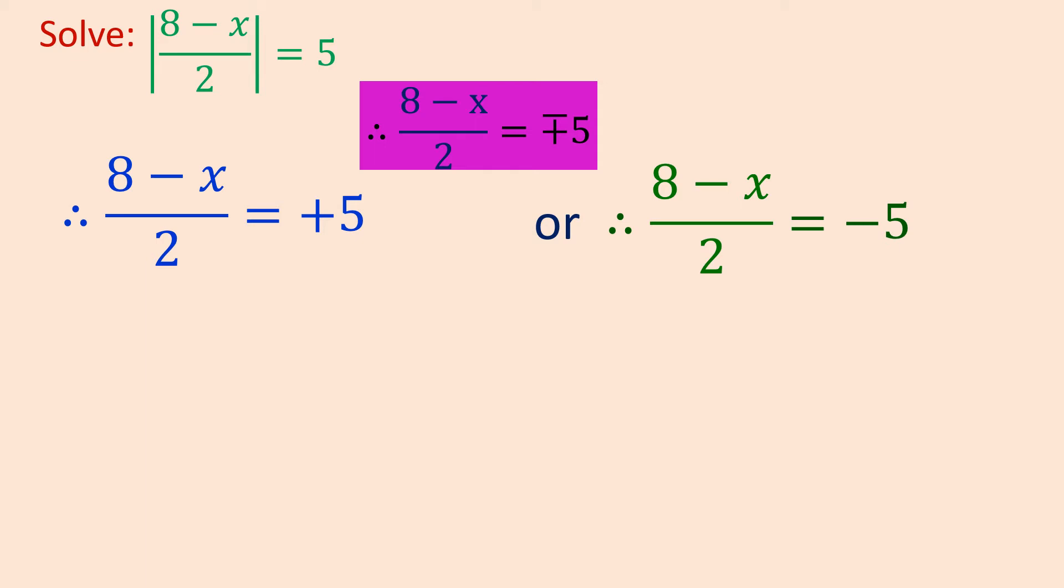For further simplification, the denominator will move to the right side, so 8 minus x equals to plus 5 times 2, or 8 minus x equals to minus 5 times 2.